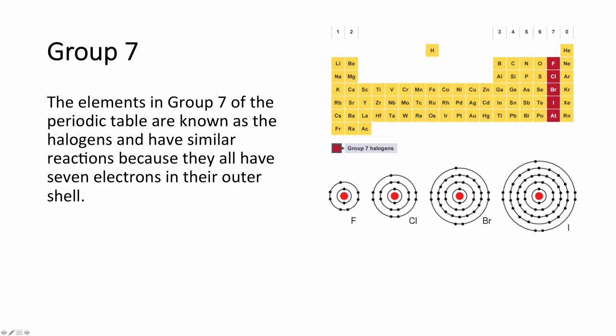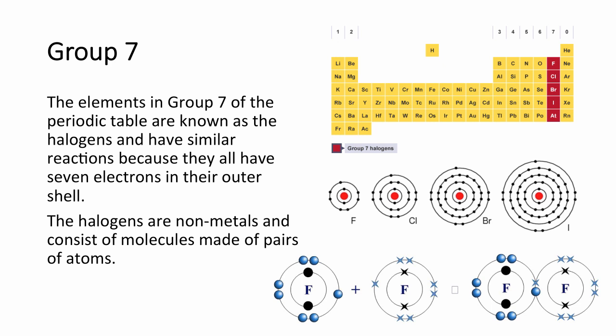Moving on to group 7: elements in group 7 of the periodic table are called the halogens, which is Greek for 'salt former'. Because they are in group 7, they all have 7 electrons in their outermost shell. Halogens are non-metals because they don't form positive ions. When on their own, they are diatomic — they have 7 electrons in their outermost shell and to fill it they share one electron each, forming a diatomic molecule such as F₂.